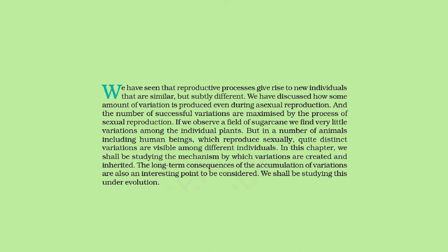We have seen that reproductive processes give rise to new individuals that are similar but subtly different. Some variation is produced even during asexual reproduction, and the number of successful variations is maximized by sexual reproduction. In a field of sugarcane we find very little variation, but in animals including human beings which reproduce sexually, quite distinct variations are visible. In this chapter we shall study the mechanism by which variations are created and inherited, and their long-term consequences under evolution.